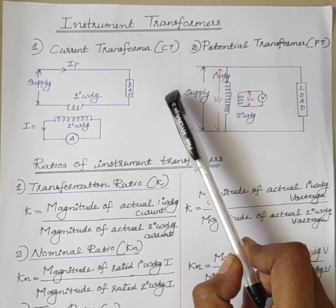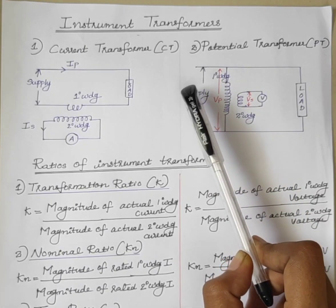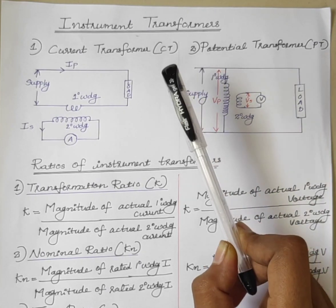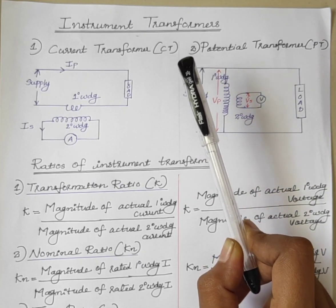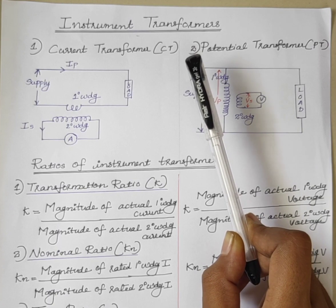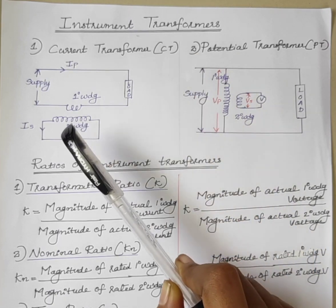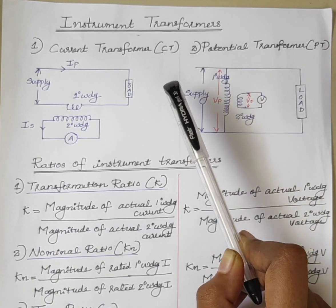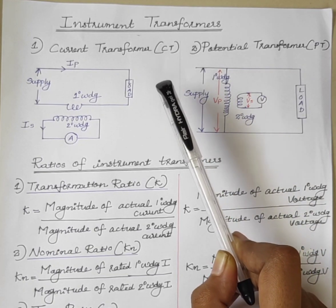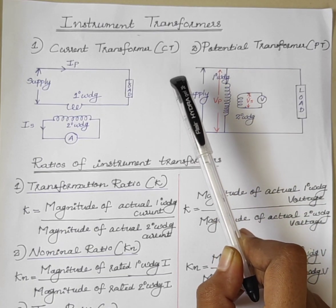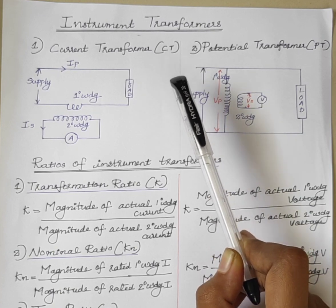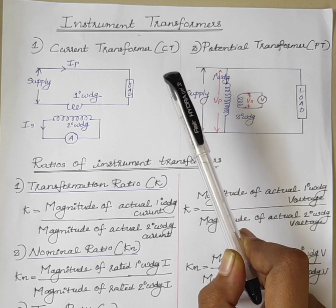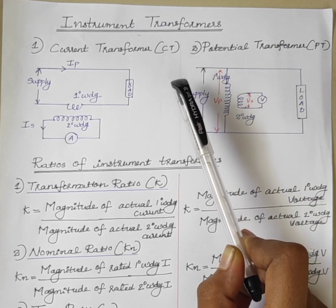Hello students, today we will discuss instrument transformers. Instrument transformers are used for extending the range of ammeters and voltmeters. Their purpose is to reduce line current or supply voltage to a value small enough to be measured with meters of moderate size and capacity.